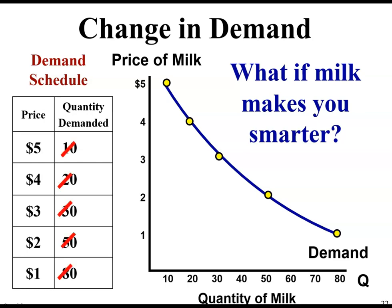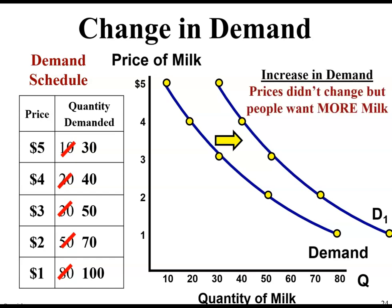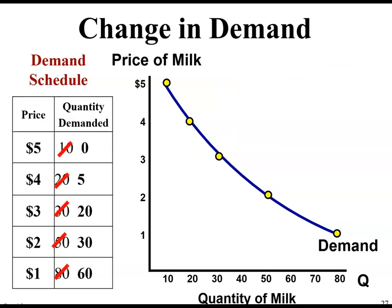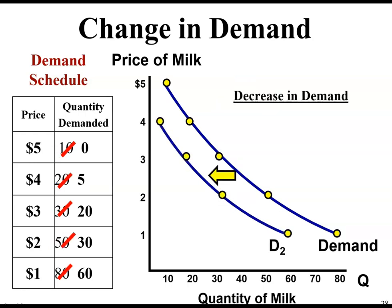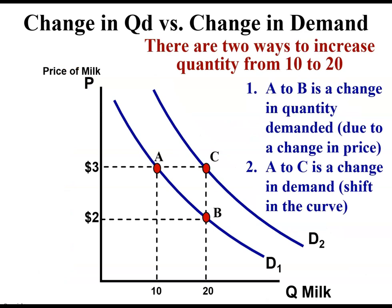What if milk makes you smarter? If that were to happen, the demand curve would shift — there would be an increase in demand. The prices didn't change, but people want more milk at the same price. What if milk causes baldness? We would have the reverse — a decrease in demand. Prices didn't change, but people want less milk at each price. To get from A to B, there is a change in quantity demanded due to a change in price — the price went from $3 to $2. There's no shift in the demand curve, but the quantity demanded has gone up because the price went down.